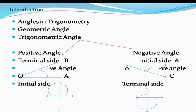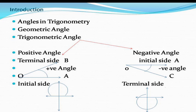A trigonometric angle is formed when a ray rotates. If we rotate a ray by keeping one end fixed, the angle formed is known as a trigonometric angle. If we rotate the ray in the anti-clockwise direction, the angle formed is called a positive angle. If we rotate the ray in the clockwise direction, the angle formed is called a negative angle. This is the basic difference between a positive angle and a negative angle.